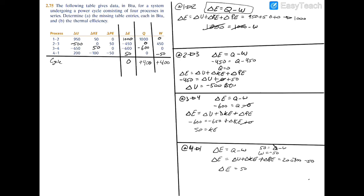Since Q equals W, and because Q is positive, we're working with a power cycle. If Q were negative, it would be a refrigeration cycle. For a power cycle, the thermal efficiency equals Q_in minus Q_out over Q_in, which is also equal to the net cycle work divided by Q_in — essentially the gain over the cost.